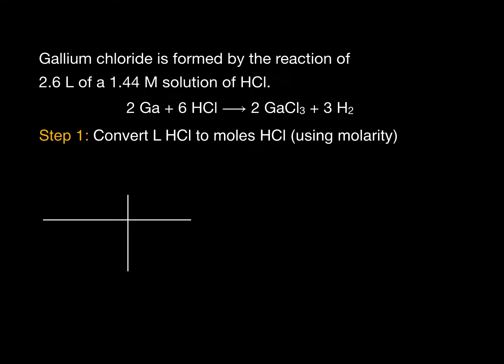So we'll start out with 1.44 molar hydrochloric acid. However, let's write it in a more useful form since we know that M stands for molarity or moles per liter.